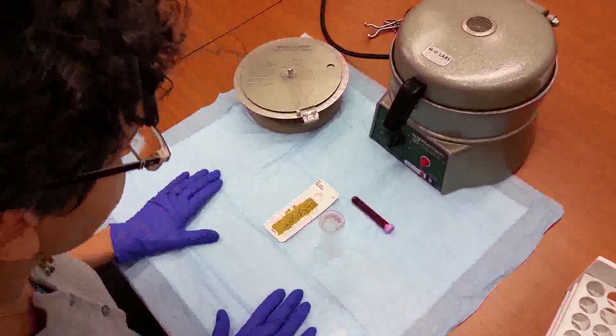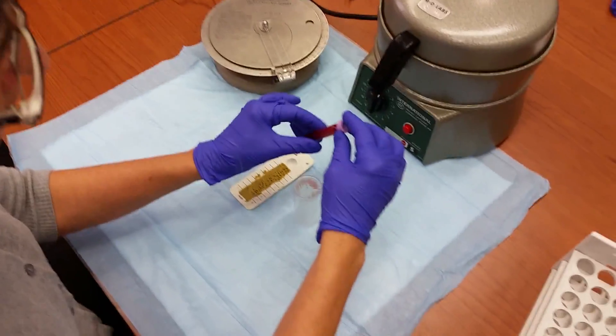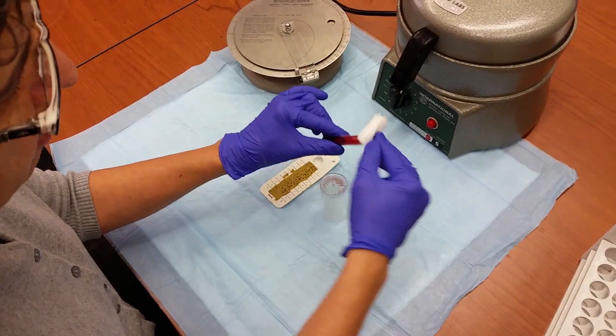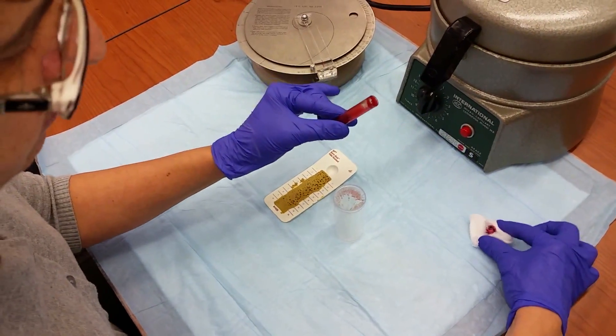I'm going to demonstrate how to spin a microhematocrit. Hematocrit is the proportion of whole blood that's made up by the red blood cells.